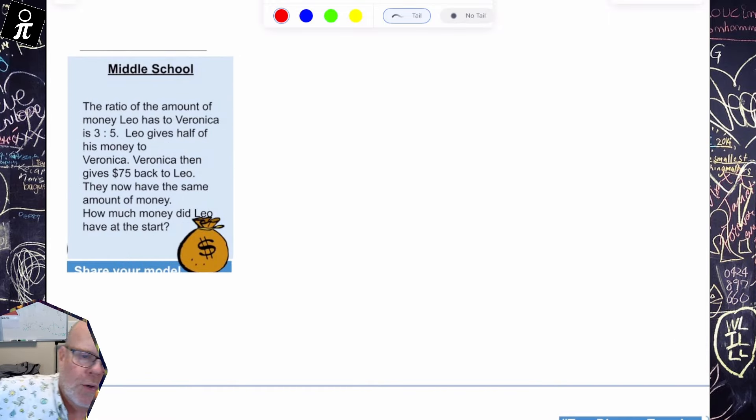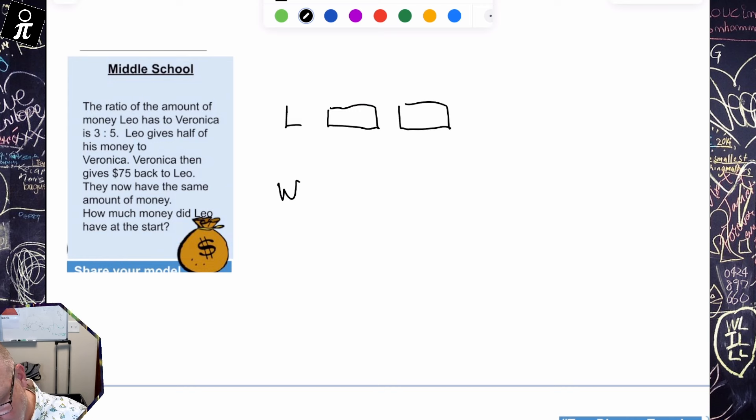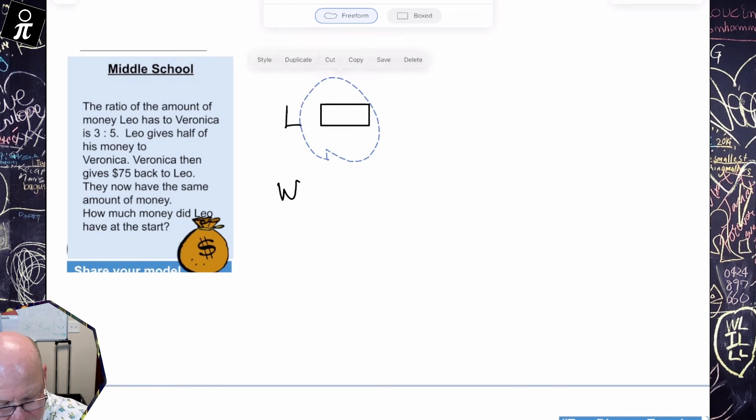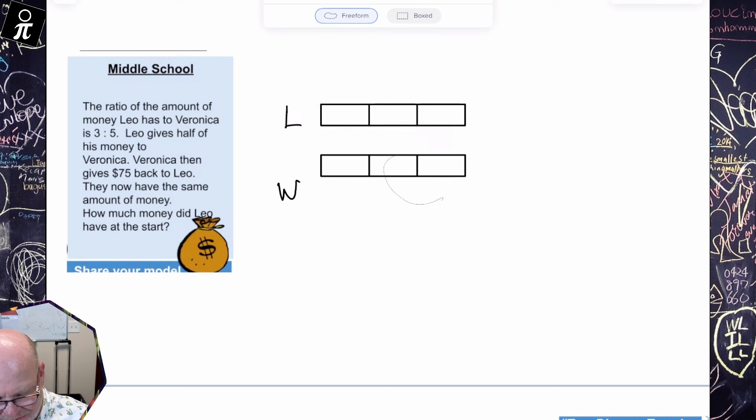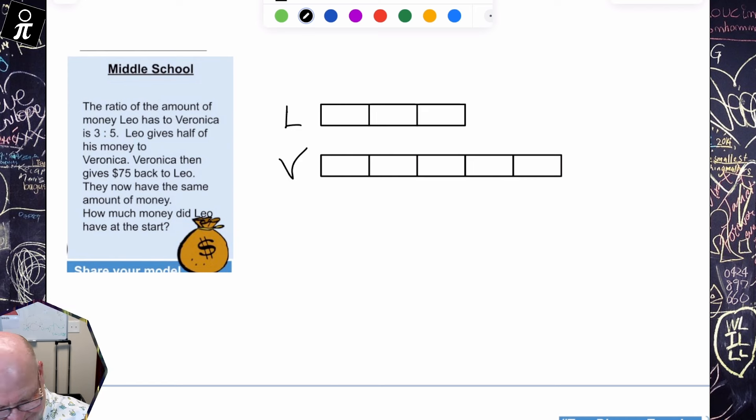Alright, the middle school. The ratio of the amount of money Leo has to Veronica is three to five. Leo gives half of his... so let's start off with, we have two characters. So our characters are Leo and Veronica. And the ratio of Leo to Veronica is three to five. So what does that mean? That means when Leo has three units, Veronica is going to have five. So I'm going to draw my units.